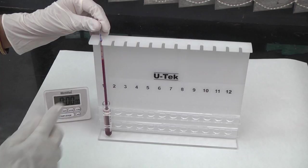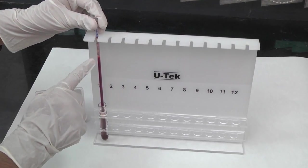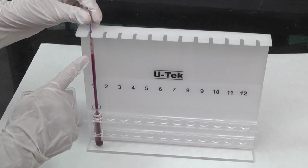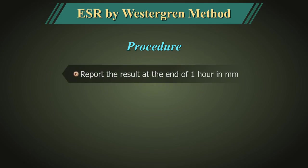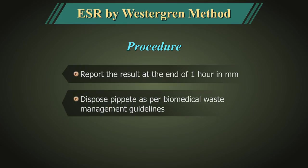Exactly after 1 hour, note the level to which the red cell column has fallen. Report the result in terms of mm at the end of 1 hour. After a series has been read, tubes and pipettes are disposed of intact as per waste disposal guidelines.